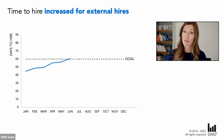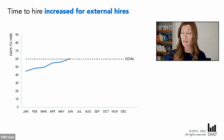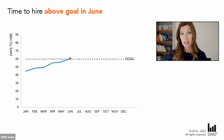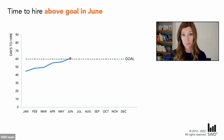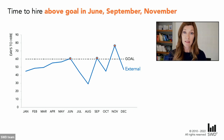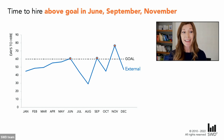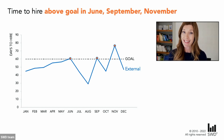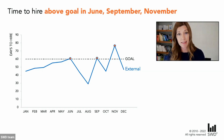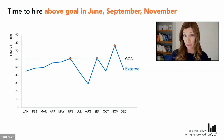If we focus first on external time to hire, it increased relatively steadily the first half of the year to above goal in June. In the latter half of the year it's been up, it's been down — it has been above goal again in September and November. When we take a closer look at the data, months having higher time to hire tend to have candidates hired who've had a greater number of interviews.